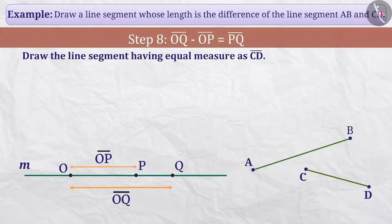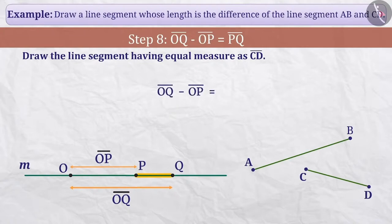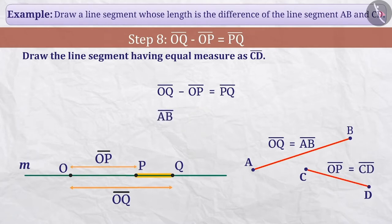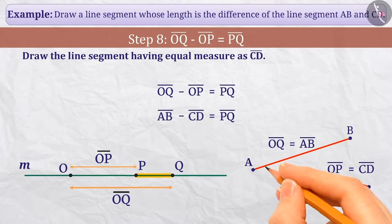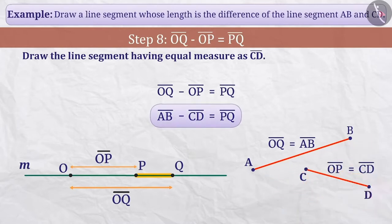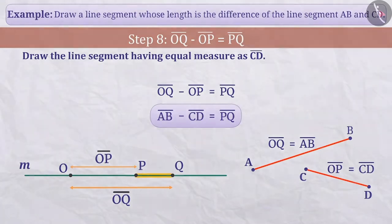Step 8: Here you can see that if we remove the part OP from OQ, then the obtained part shows the difference of the lengths of both. That is, OQ minus OP is equal to PQ. Since OQ is equal to AB and OP is equal to CD, we can say that AB minus CD is equal to PQ. In this way, we have drawn line segment PQ as the difference between the lengths of AB and CD.